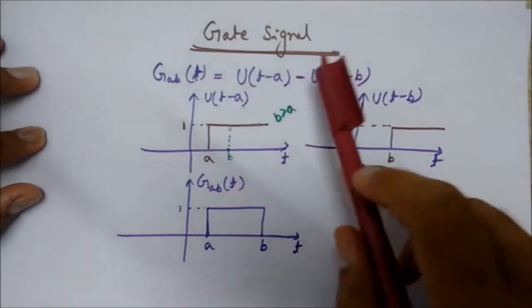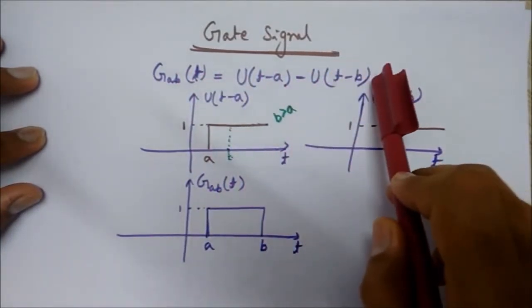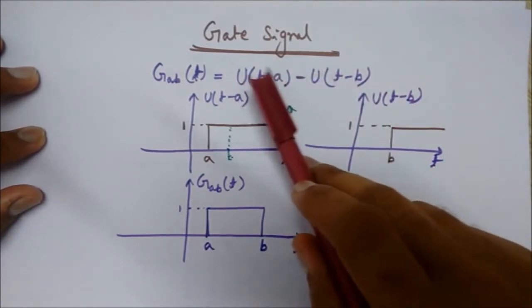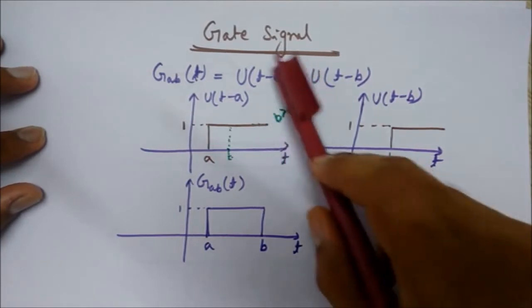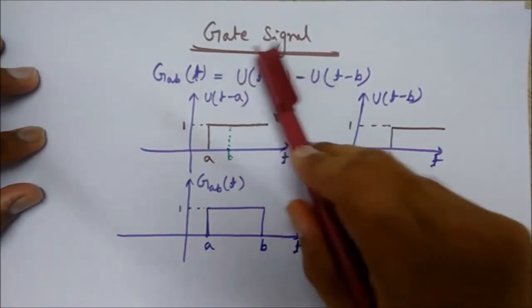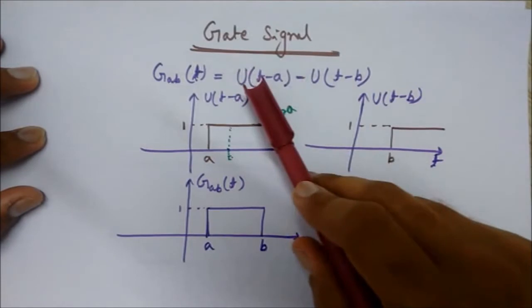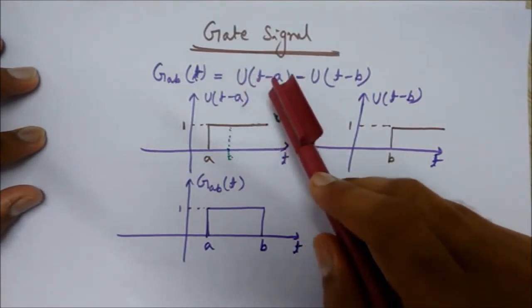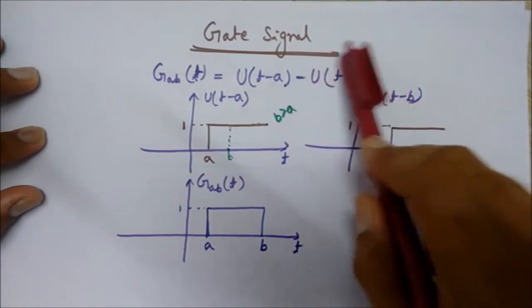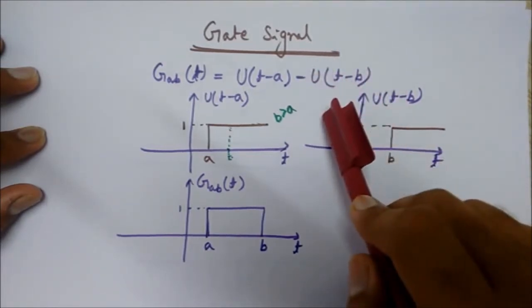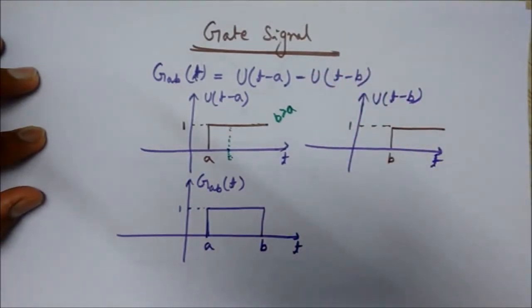...minus U(t-b). So U denotes the unit step signal we have seen. U(t-a) means the unit step signal shifted by a, and this unit step signal is shifted by b. A and b are constants.